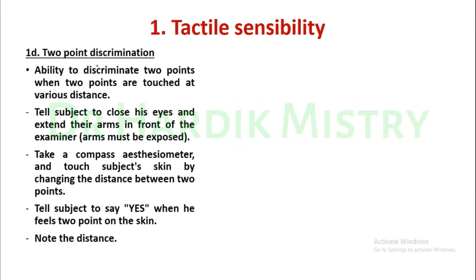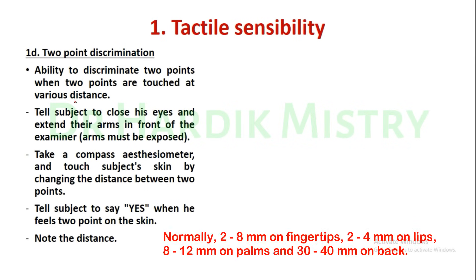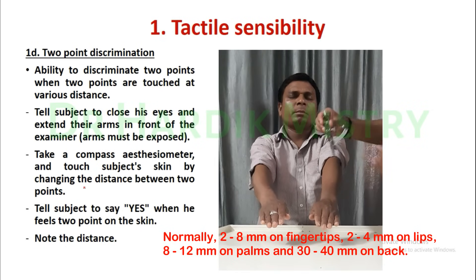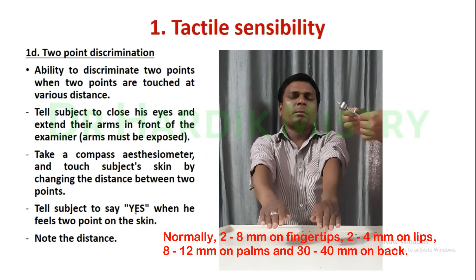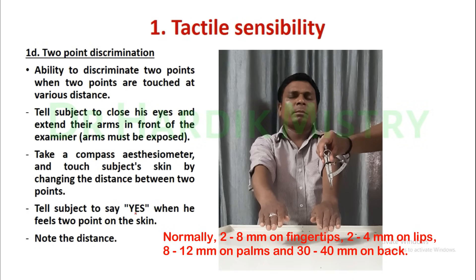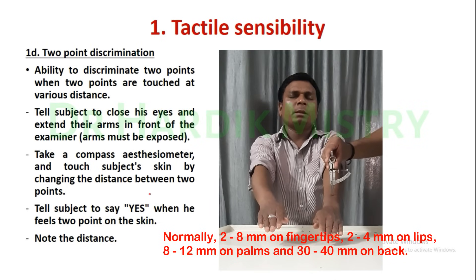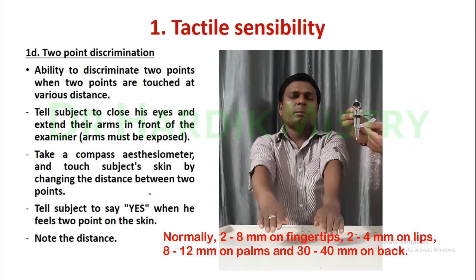Now, two-point discrimination. What is two-point discrimination? It is the ability to discriminate two points when two points are touched at various distances. Tell the subject to close his eyes and extend their arms. Arms must be exposed. Take a compass esthesiometer and touch the subject's skin by changing the distance between two points. Tell the subject to say yes when he feels two points on the skin. Note the distance between the two points.